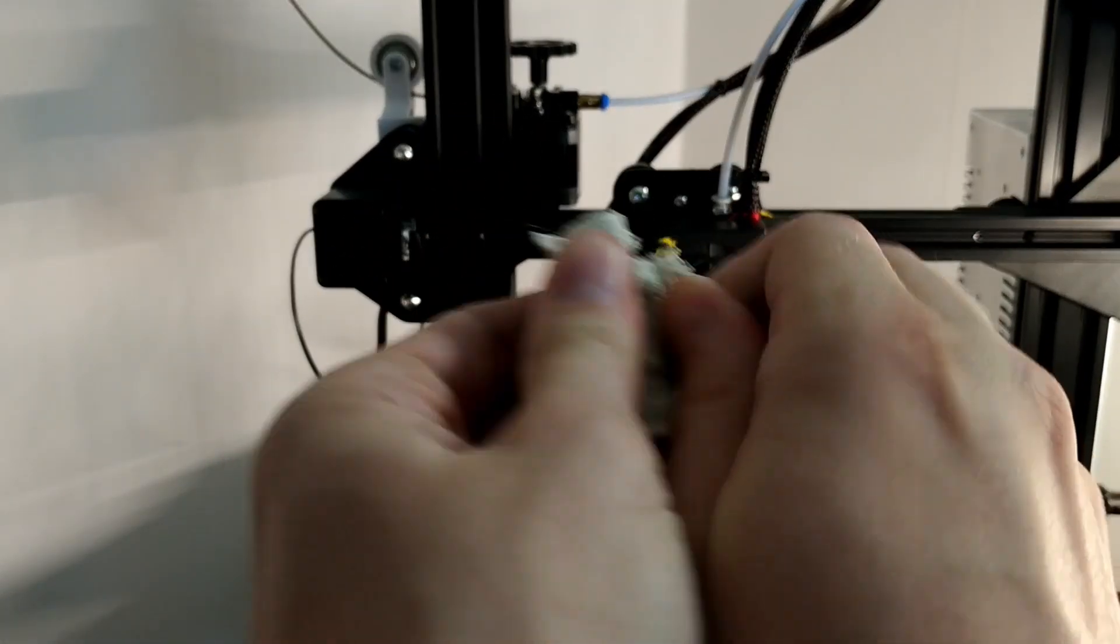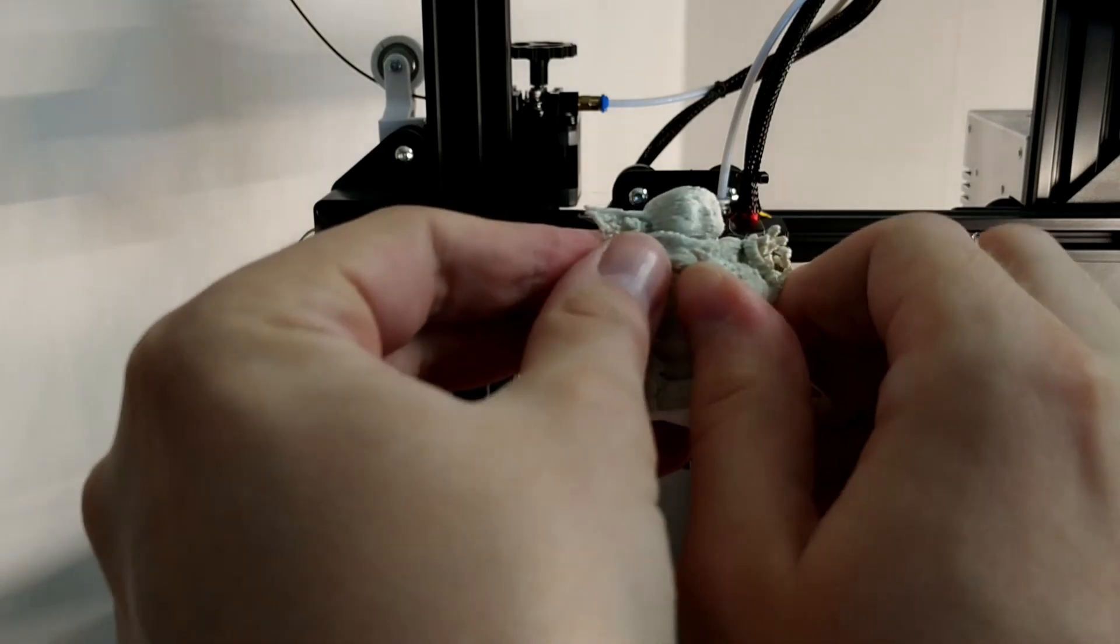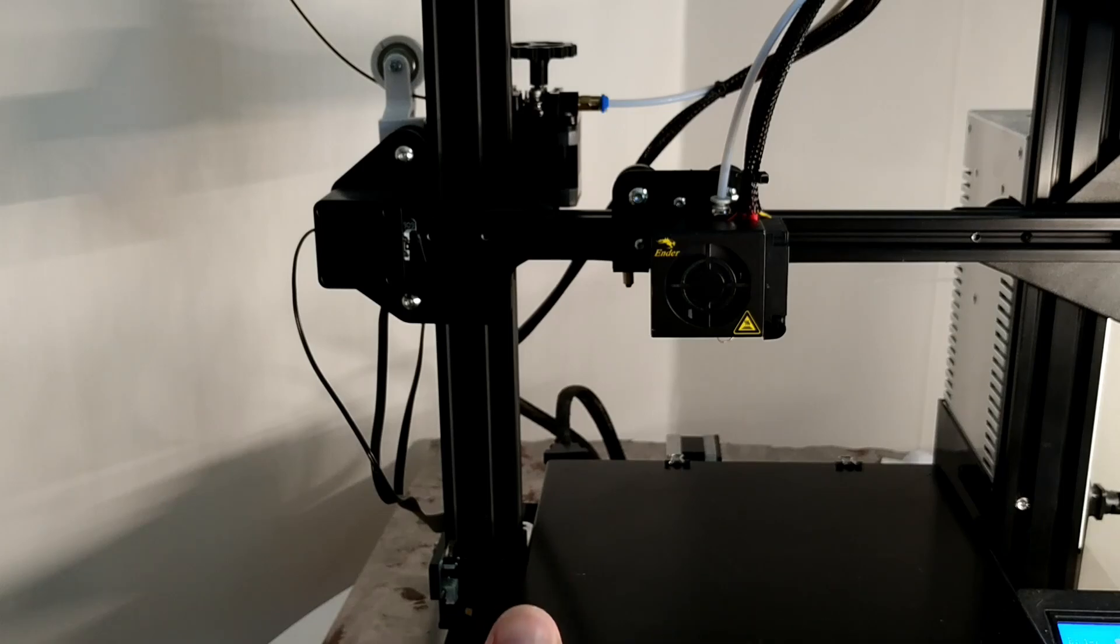So, which nozzle should you go with? Personally, I print mostly functional stuff where the finish doesn't really matter that much, so I've settled for 0.6mm 95% of the time.